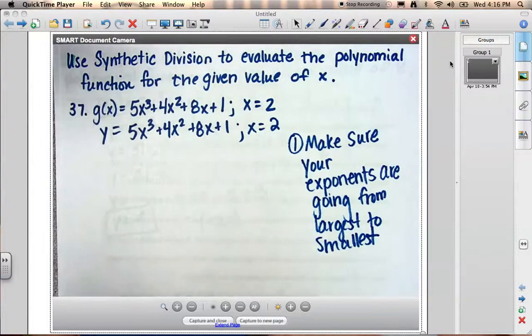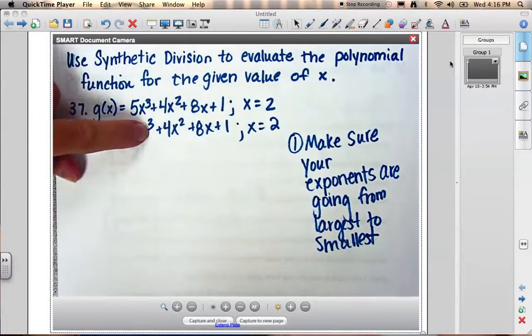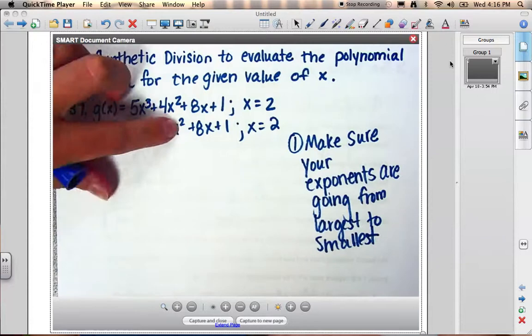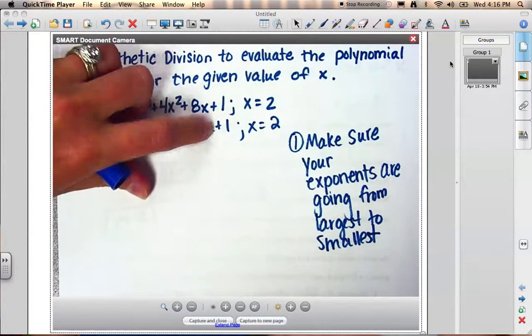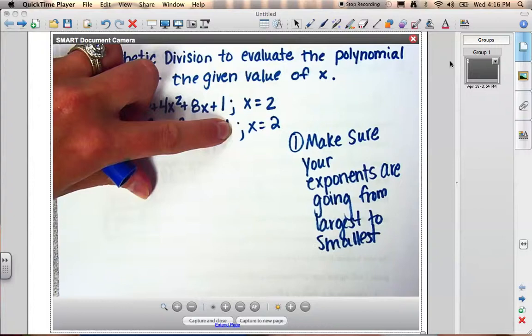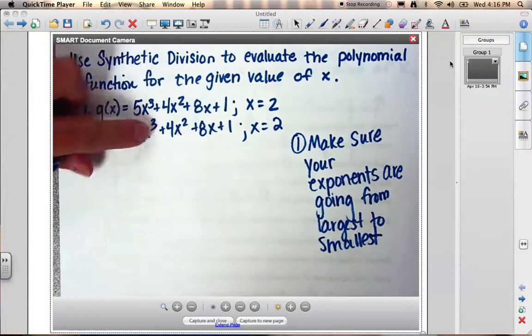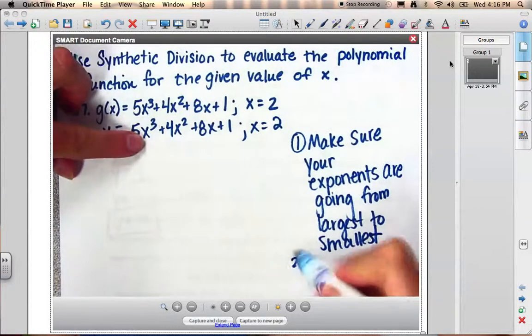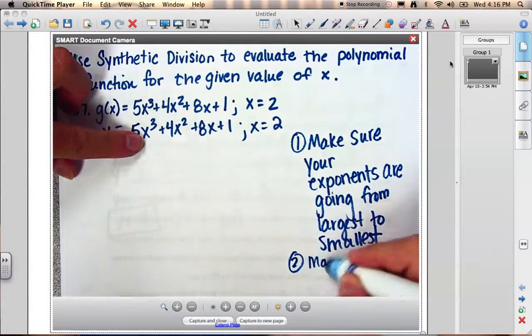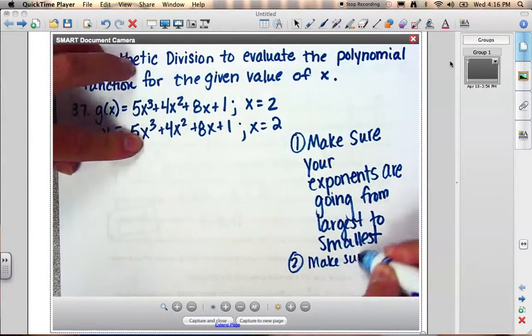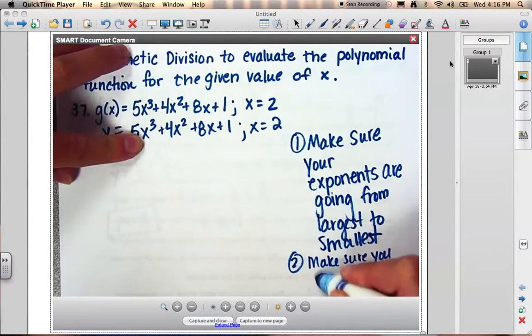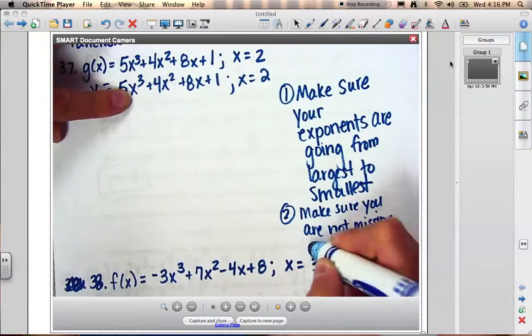So as we look at this function, we notice that our exponents are indeed going down. It's 3, 2, 1. And you don't have a variable, so the exponent is 0. So it is going in descending order.